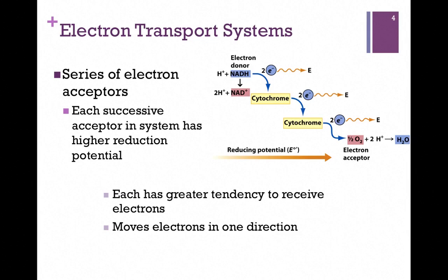Our final electron acceptor is oxygen, which has the highest reduction potential overall.